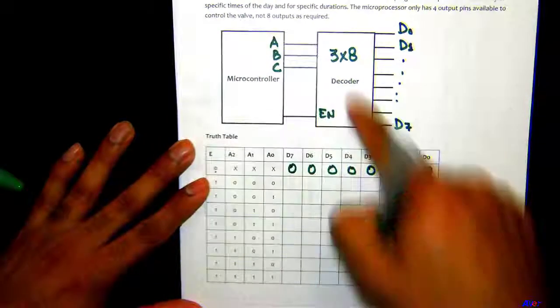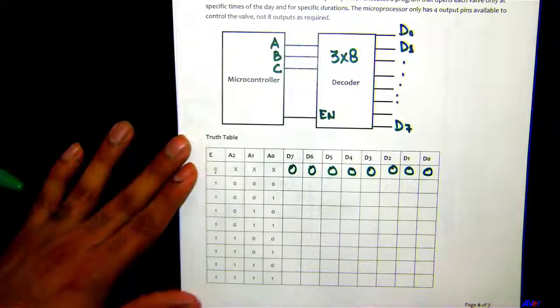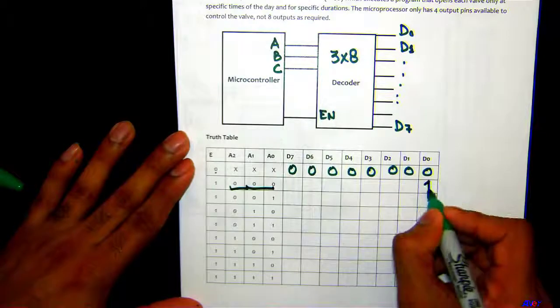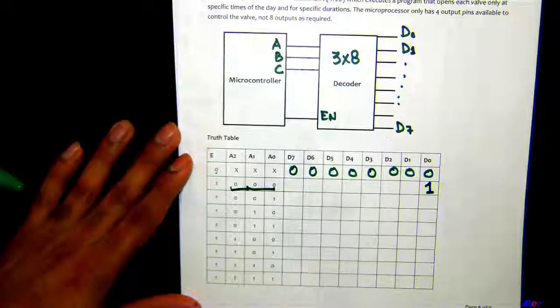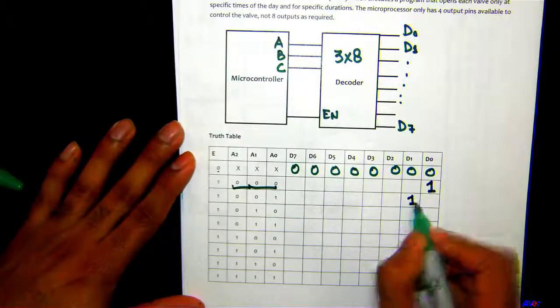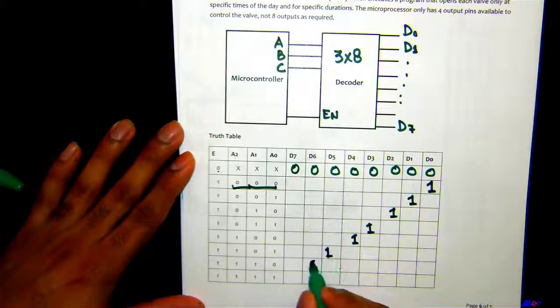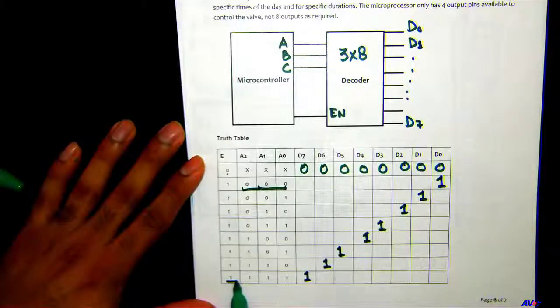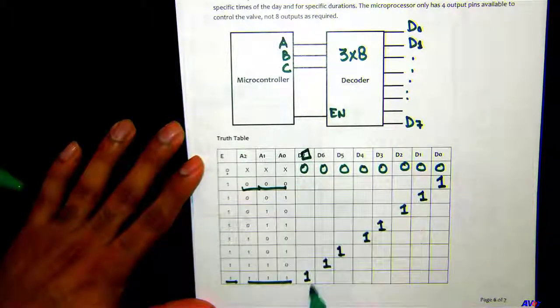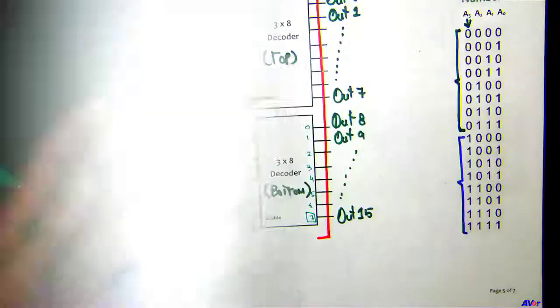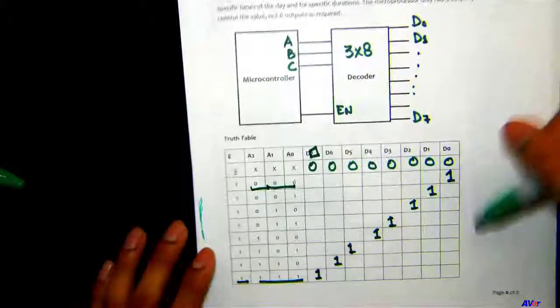If enable is one and the inputs from the microcontroller are zero-zero-zero going into the decoder, the output D0 is going to be high and the rest will be zero. The outputs form a diagonal pattern — if enable is high and inputs are triple one, that's a code of seven, so D7 is high and all others are zero.